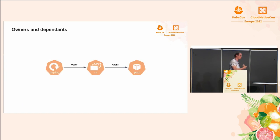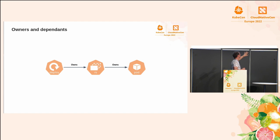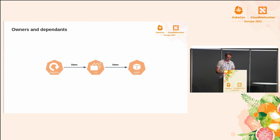Switching gears: owners and dependents — one last topic to introduce before we jump into the real stuff. This is also a very well-known Kubernetes concept. The most obvious chain of owners and dependents that everybody uses is deployment → replica set → pod. A deployment owns a replica set, a replica set owns a pod. If I delete the deployment, the replica set gets deleted, the pods get deleted. Very, very common workflow, and it's used across Kubernetes in many various formats and ways.